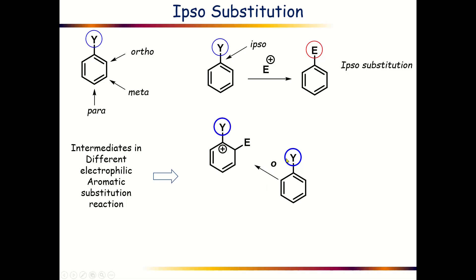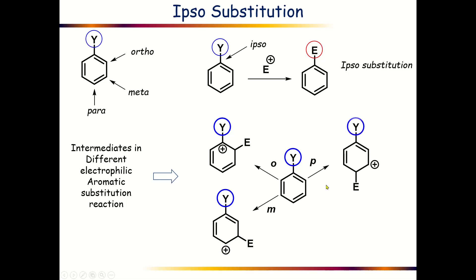If ortho substitution takes place in this particular benzene derivative, then the electrophile E will be attached with this ortho carbon atom and the positive charge must be generated on this ipso position. In case of meta substitution, the electrophile will be attached with this meta carbon atom and the positive charge will be generated over the para position. In case of para substitution reaction, the electrophile will be attached with this para carbon atom and the positive charge will be over the meta carbon atom.